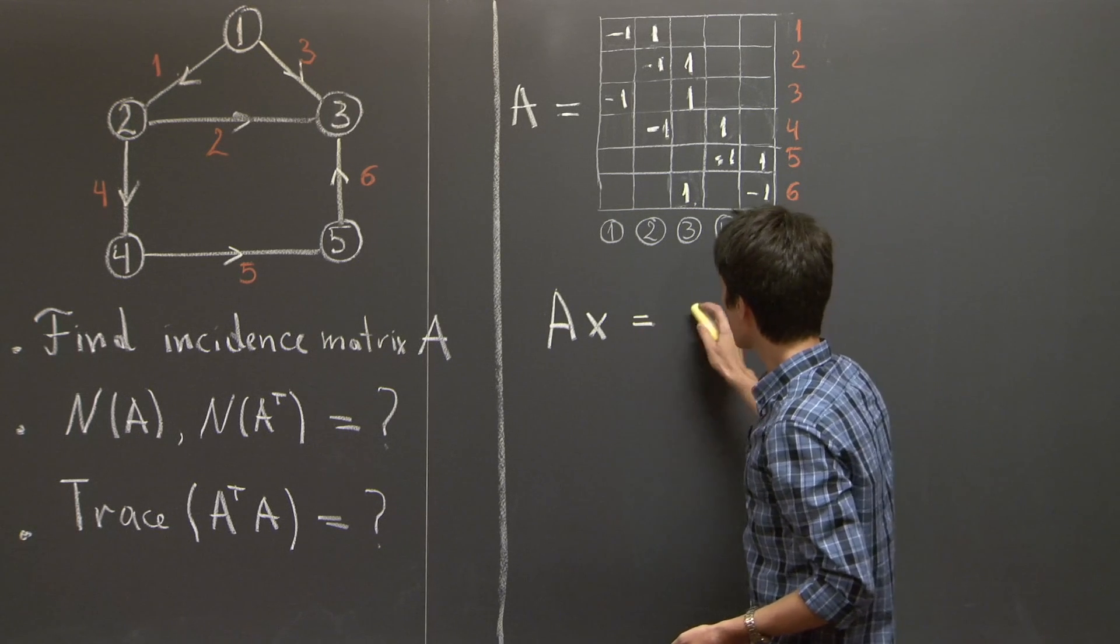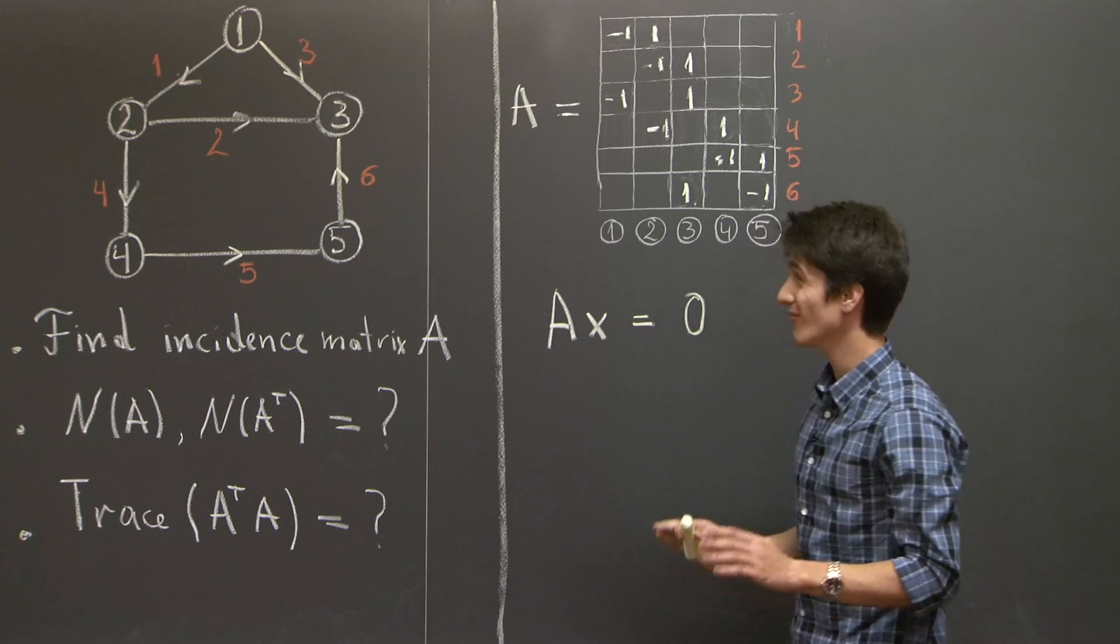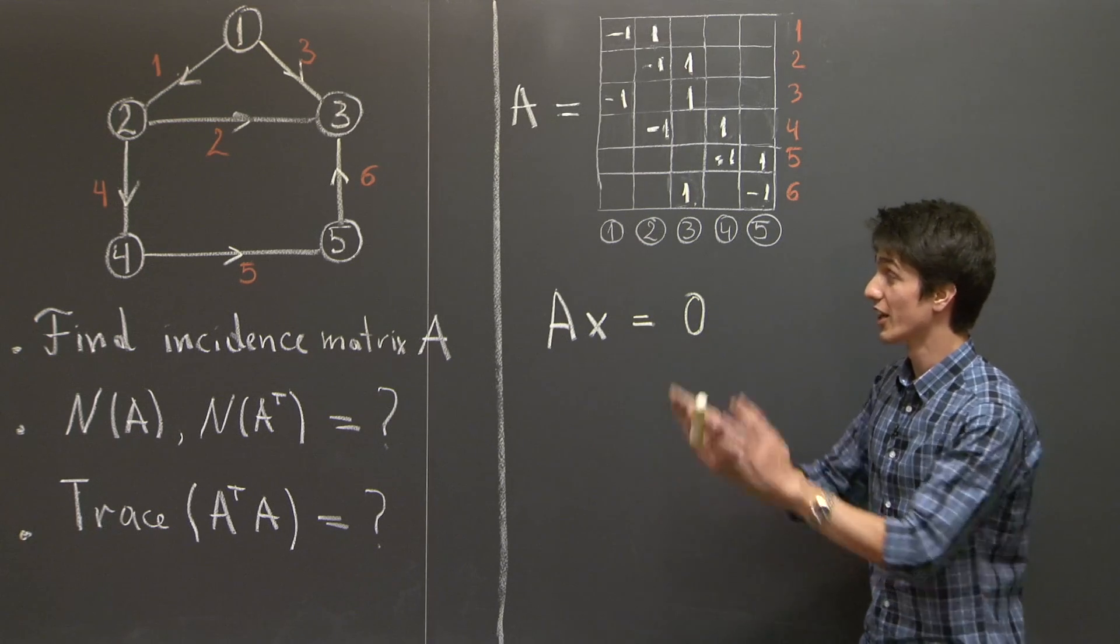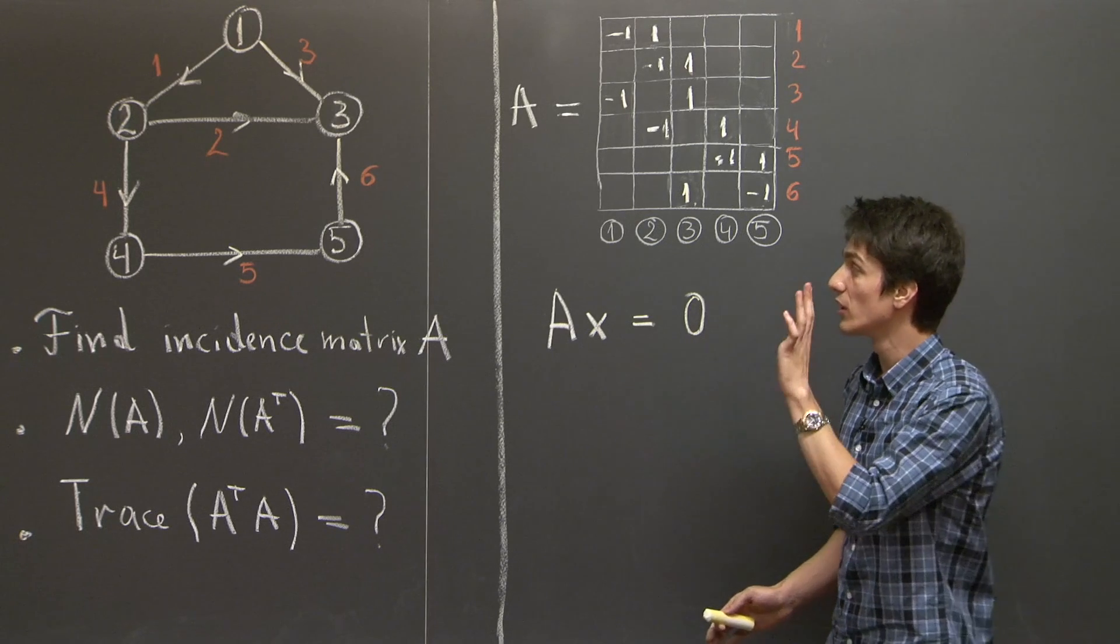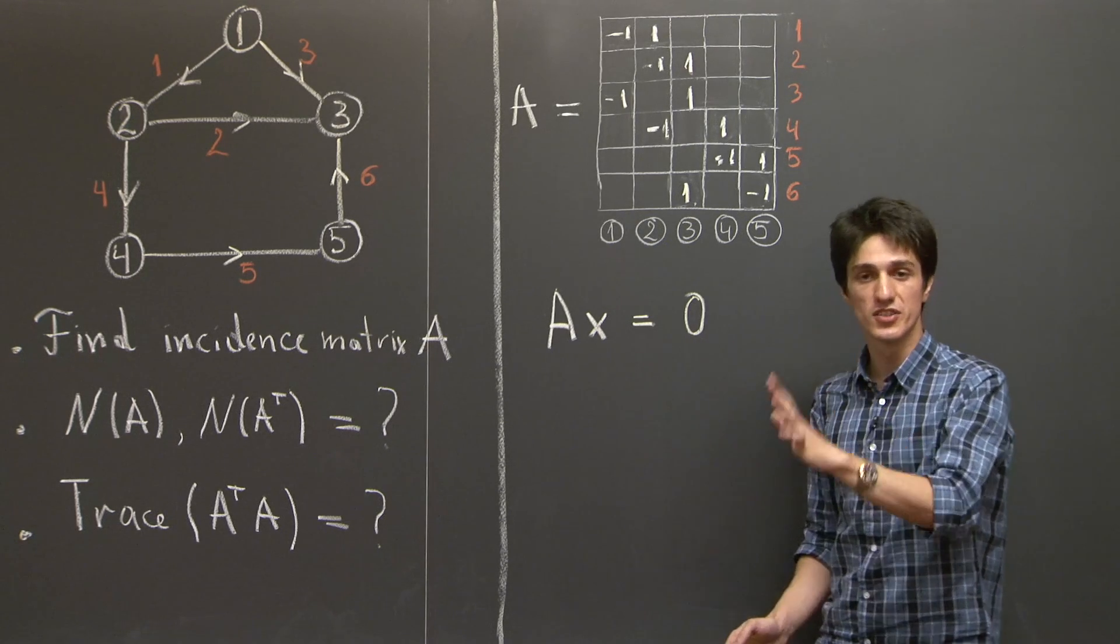and gives precisely the potential differences across the edges of the graph. OK, so then if Ax is to be 0, this means that across the graph, like across all the edges of the graph, all potential differences are 0.